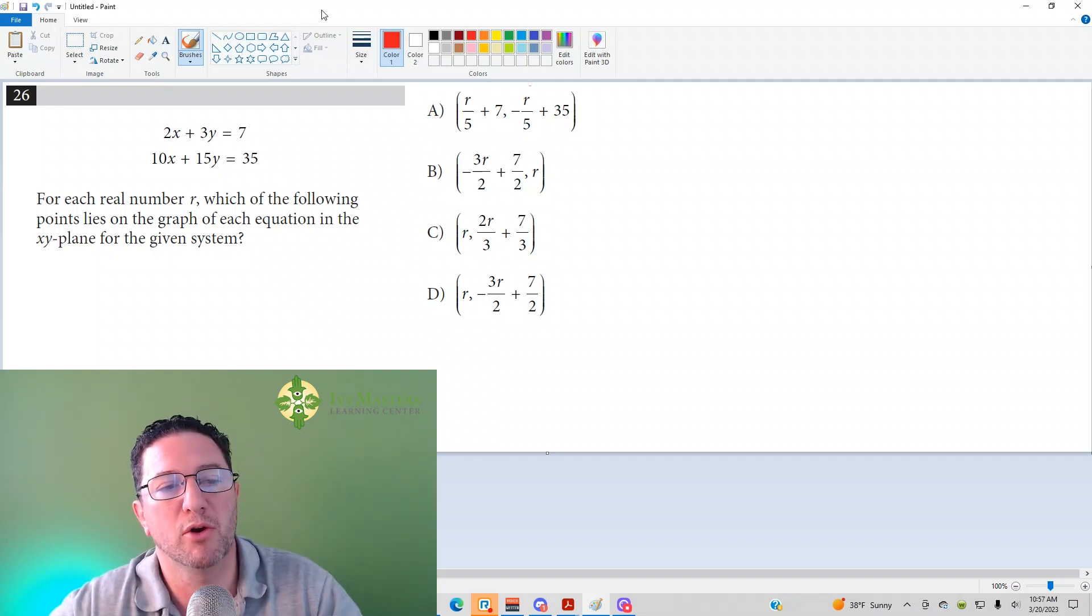Question 26 reads: for each number R, which of the following points lies on the graph of each equation in the XY plane for the given system.